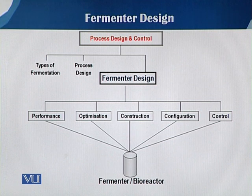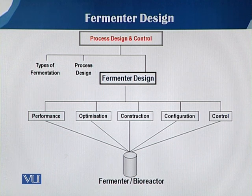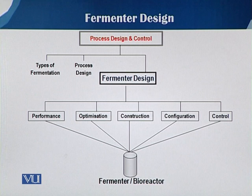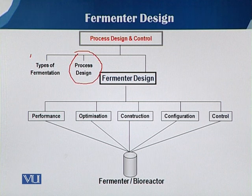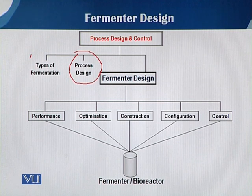If we want to produce any by-product through the fermentation process, the whole situation is based upon process design and control. Process design and control is further subdivided into the type of fermentation being used — solid-state fermentation or submerged liquid fermentation — and the process design mode, such as fed-batch, batch, or continuous culture. The major element is the fermenter design itself.